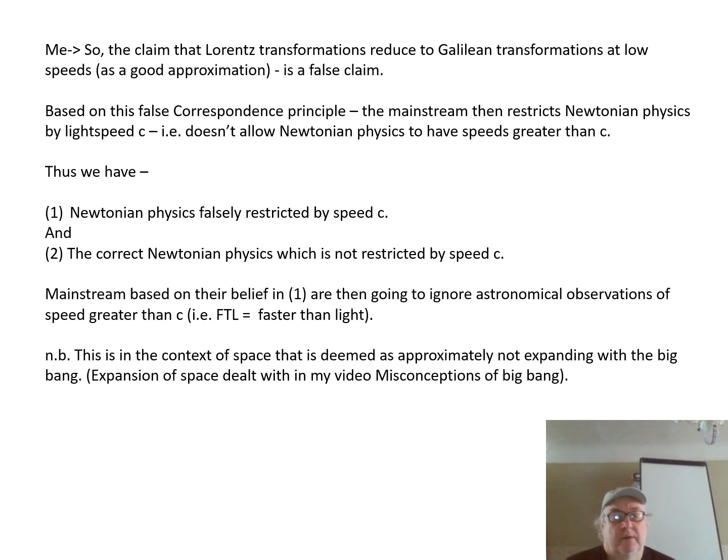Meaning that the claim the Lorentz transformation produced Galilean transformations at low speeds as being a good approximation is a false claim. But based on the false correspondence principle, the mainstream then restricts Newtonian physics to be less than the light speed c and doesn't allow Newtonian physics to have speeds greater than c. Thus we have two versions of Newtonian physics.